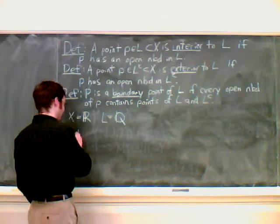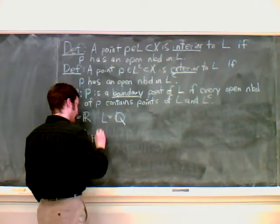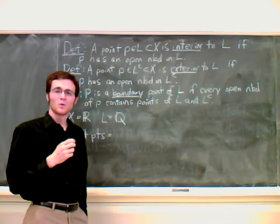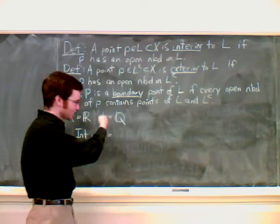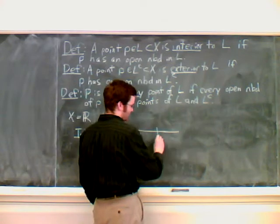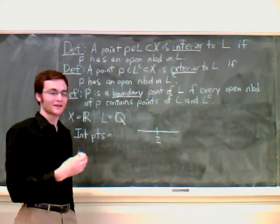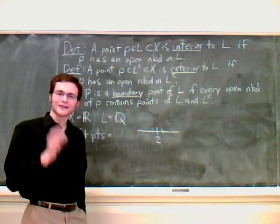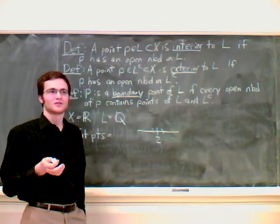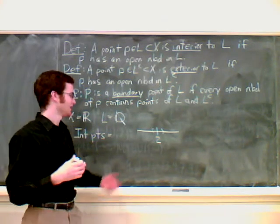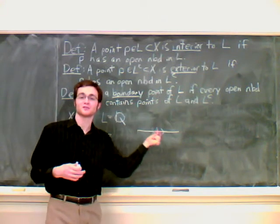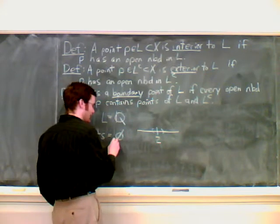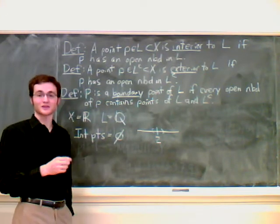Let's talk about interior points. It has to be in the set, so it's going to be a rational number. Let's take 2 to think about. In any area around 2, we know there is an irrational number. That means you can't come up with a small enough interval that's all rational inside of it. So there are no interior points of the rational numbers.